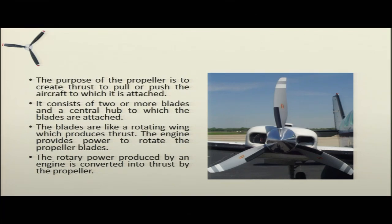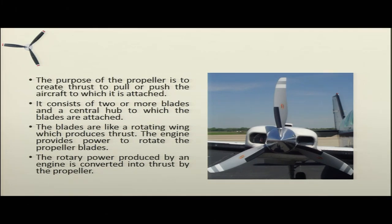The engine generates power and that power is converted into thrust to pull or push the aircraft. The propeller consists of two or more blades and a central hub to which the blades are attached. You can see in the figure there are three blades of a propeller and a central hub. The blades are like a rotating wing which produces thrust — they are not fixed, they are rotating wings.